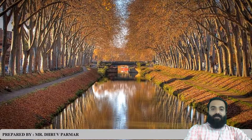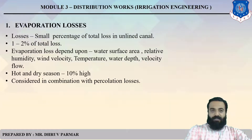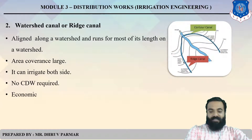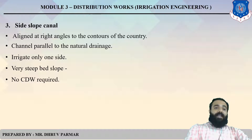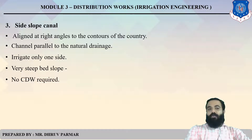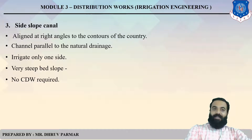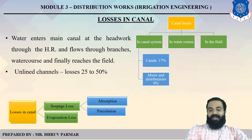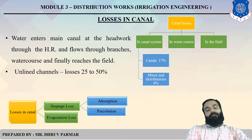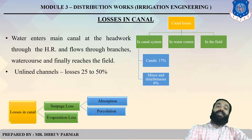In summary, this lecture covered: alignment — the center line passing through the ground — with three types: contour, side slope, and watershed. The watershed canal irrigates both sides, while side slope and contour irrigate only one side. Watershed alignment follows the watershed or catchment area; side slope is at a right angle to the contour; and contour canal is parallel to the contour. For canal losses, there are three types: evaporation, percolation, and absorption. Percolation loss is the highest — equal to three times absorption loss. In absorption loss, the water table is below the ground; in percolation loss, the water table is near the ground.